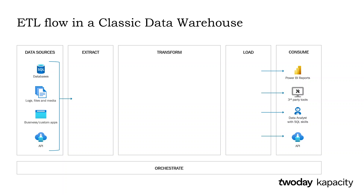Here you see a classic architecture of a data warehouse solution. The first step is to extract from the different sources we have. Then we transform the data properly as part of a SQL database, and then we load the data and make it available to all the different consumers. This is how we have been building solutions for many, many years — that's this ETL data flow.